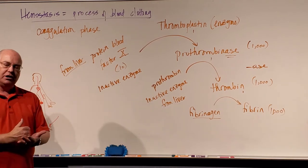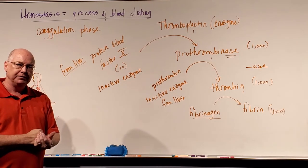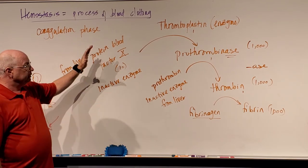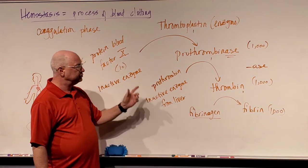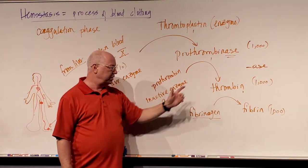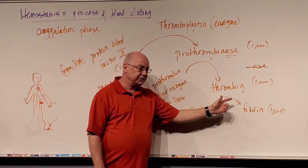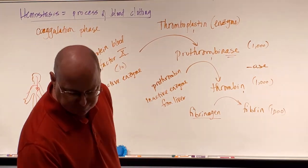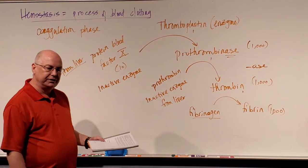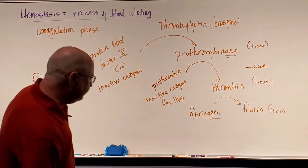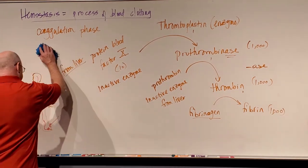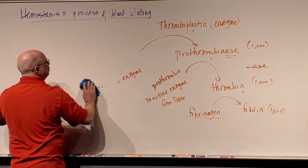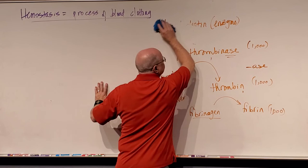So you need to know the steps of blood clotting and you need to know the sub steps of coagulation. Thromboplastin converts factor 10 to prothrombinase, prothrombinase converts prothrombin to thrombin, thrombin converts fibrinogen to fibrin. There are some definitions at the bottom of the page. I want to explain these.